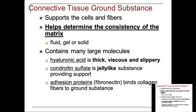Ground substance helps determine the consistency — whether it's fluid, gel, or solid. It contains large molecules like hyaluronic acid, which is thick, viscous, and slippery — very important for cartilage in your joints. Hyaluronic acid is found between any diarthrodial or freely movable joint. The meniscus in the knee and the discs in your spine have hyaluronic acid. Chondroitin sulfate is a more jelly-like substance that provides support. Fibronectin binds collagen fibers to the ground substance.